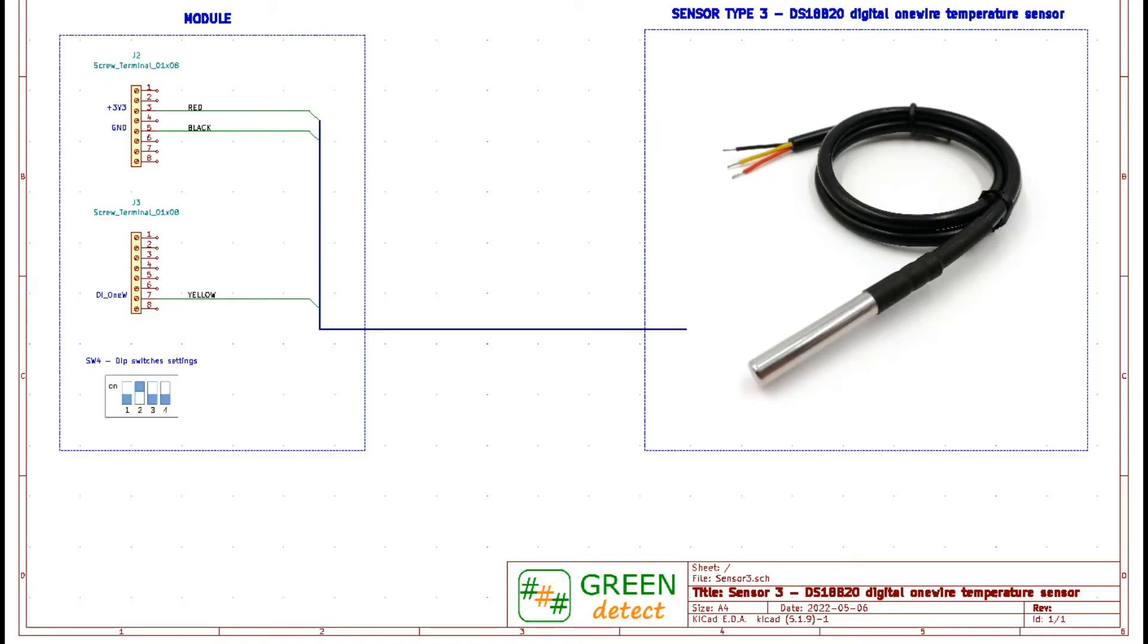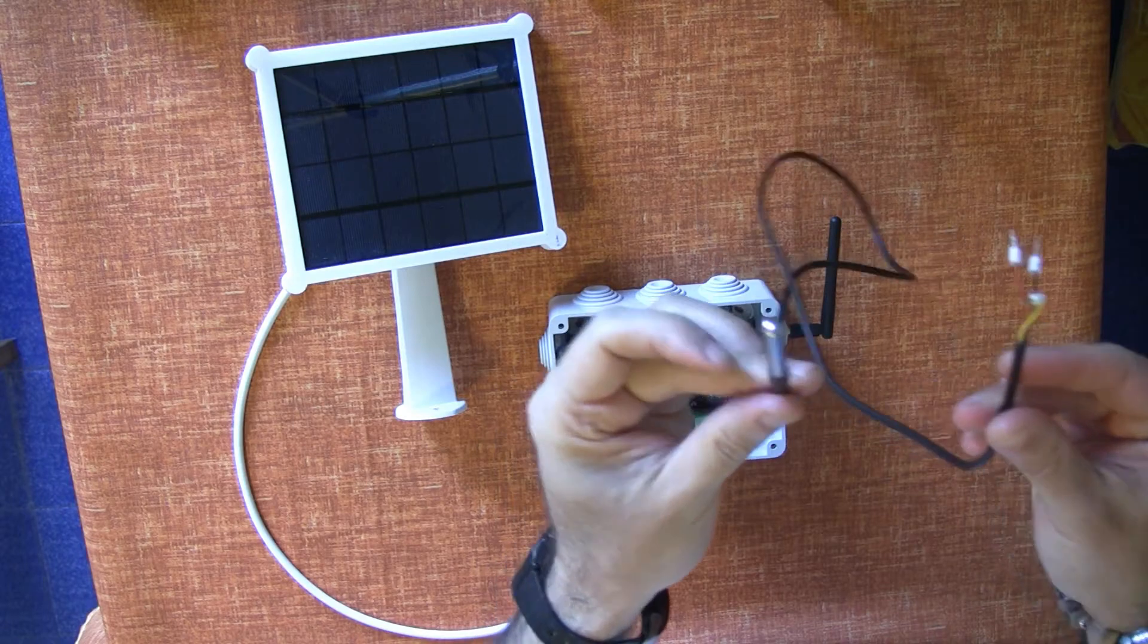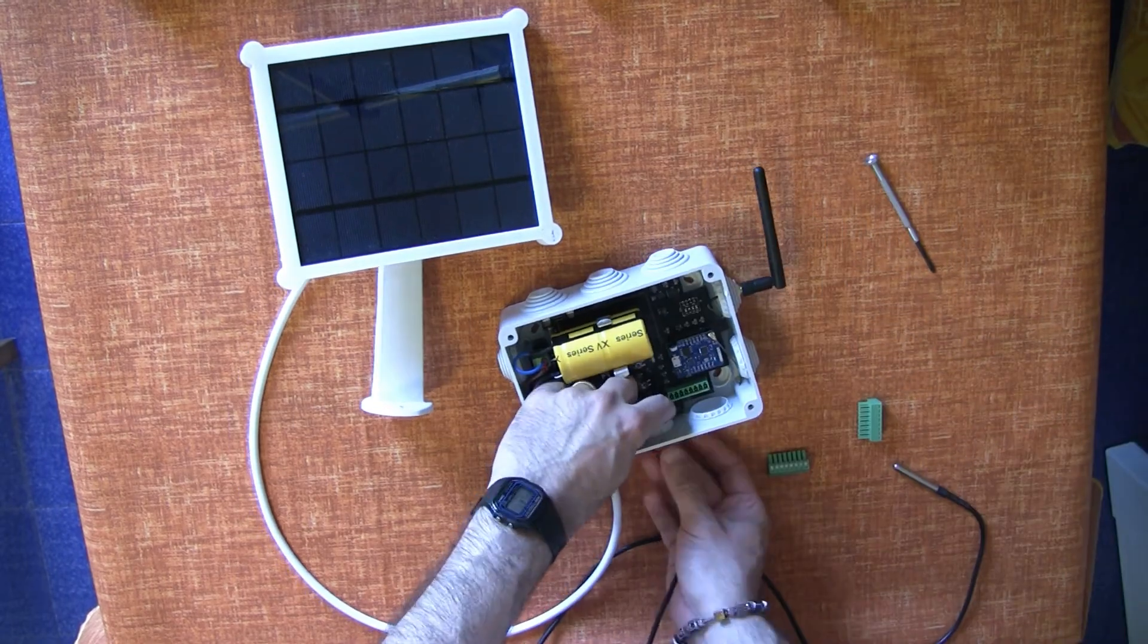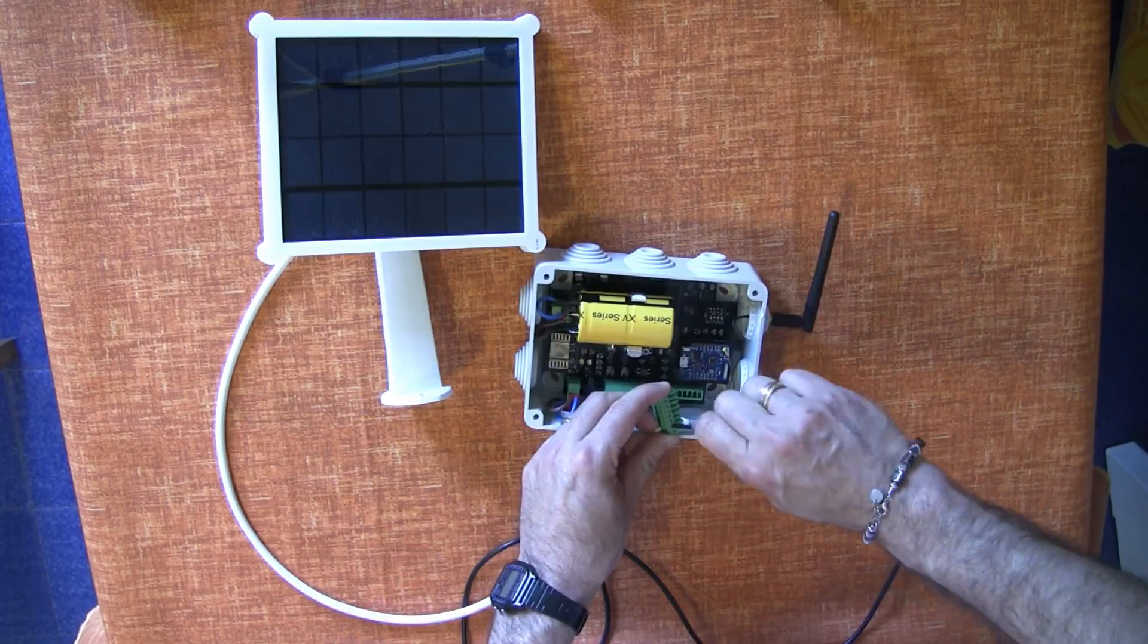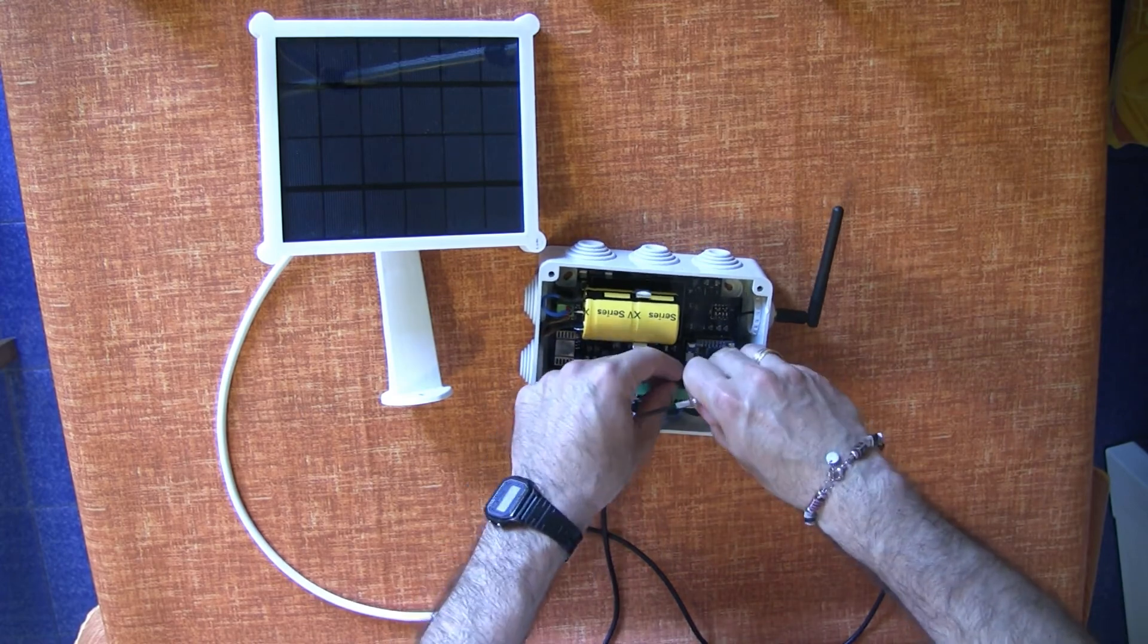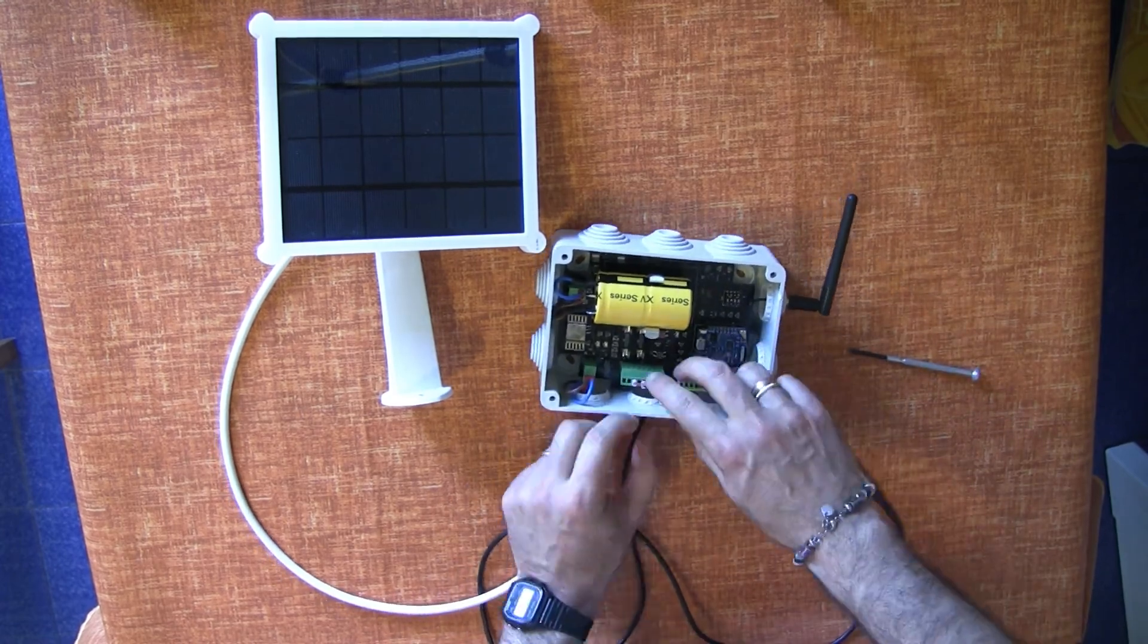Sensor type 3: DS18B20 1-wire digital temperature sensor. High precision digital sensor for monitoring the ambient temperature and also the temperature of fluids.